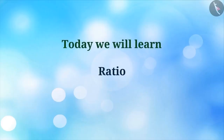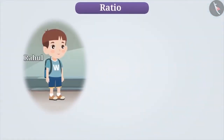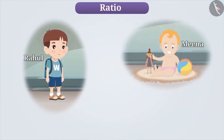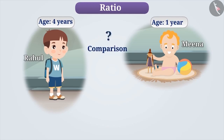Today, we will learn about Ratio. This is Rahul and she is his sister Meena. Rahul's age is 4 years while Meena's age is 1 year. If we have to compare their ages, then how are we going to do this?